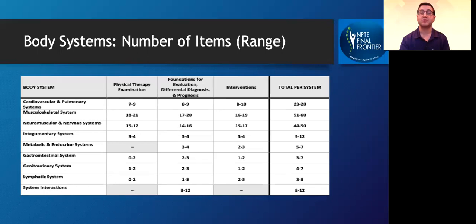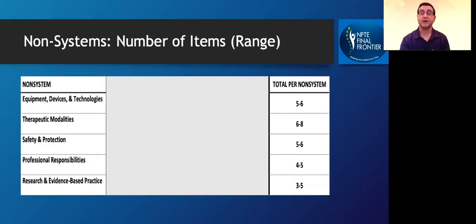The following chart is provided to you by the NPTE blueprint. You can see that this chart is going to break down how many questions per topic you should be expecting. You'll recognize that musculoskeletal system, neuromuscular nervous system, and cardiovascular pulmonary system have the most questions. Non-systems may not have as many questions, but it doesn't mean that it's any less important.